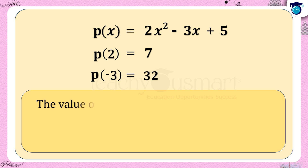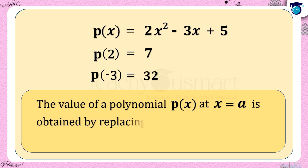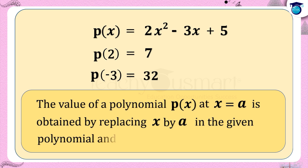The value of a polynomial p(x) at x equals a is obtained by replacing x by a in the given polynomial, and is denoted by p(a).